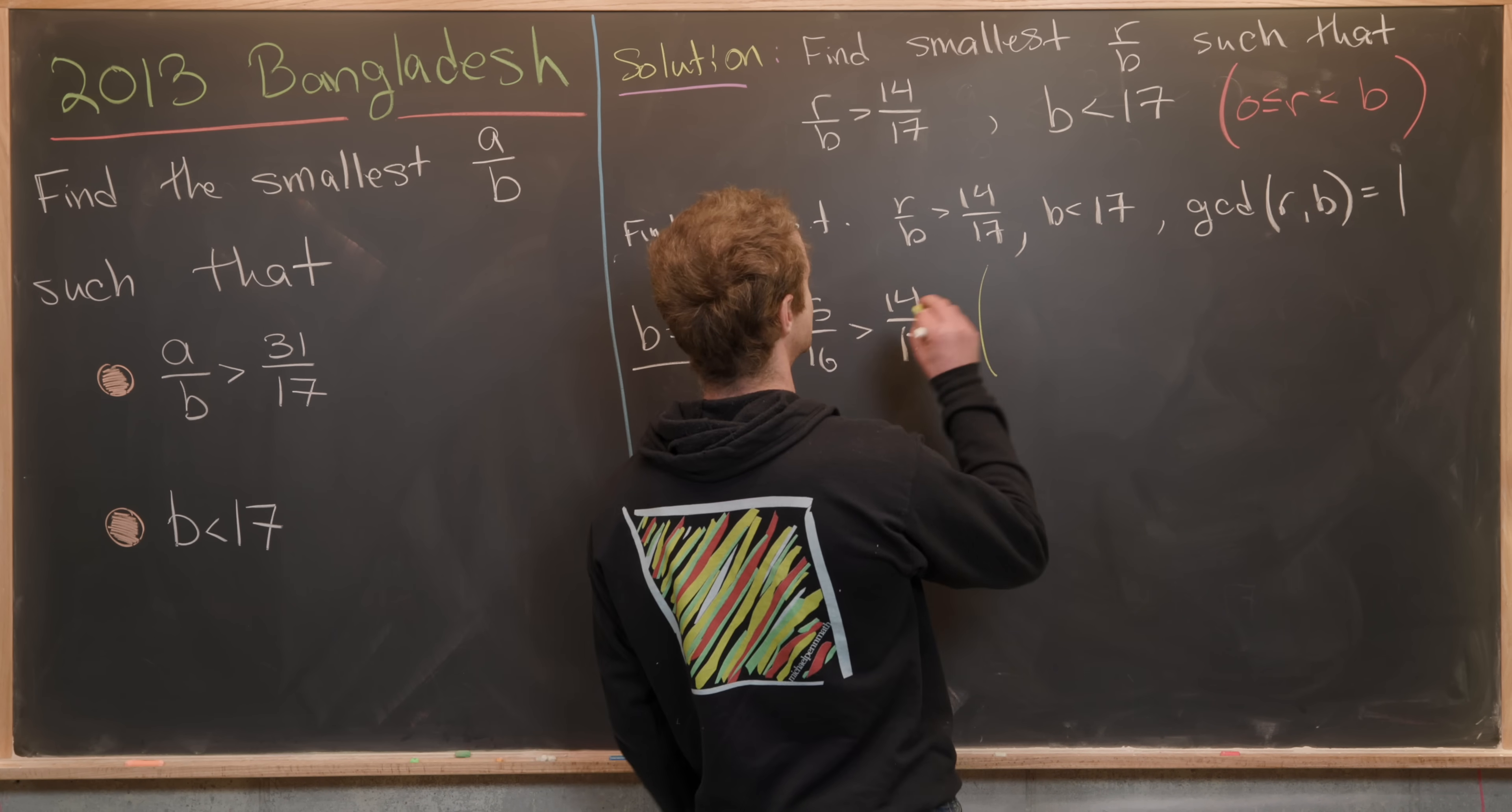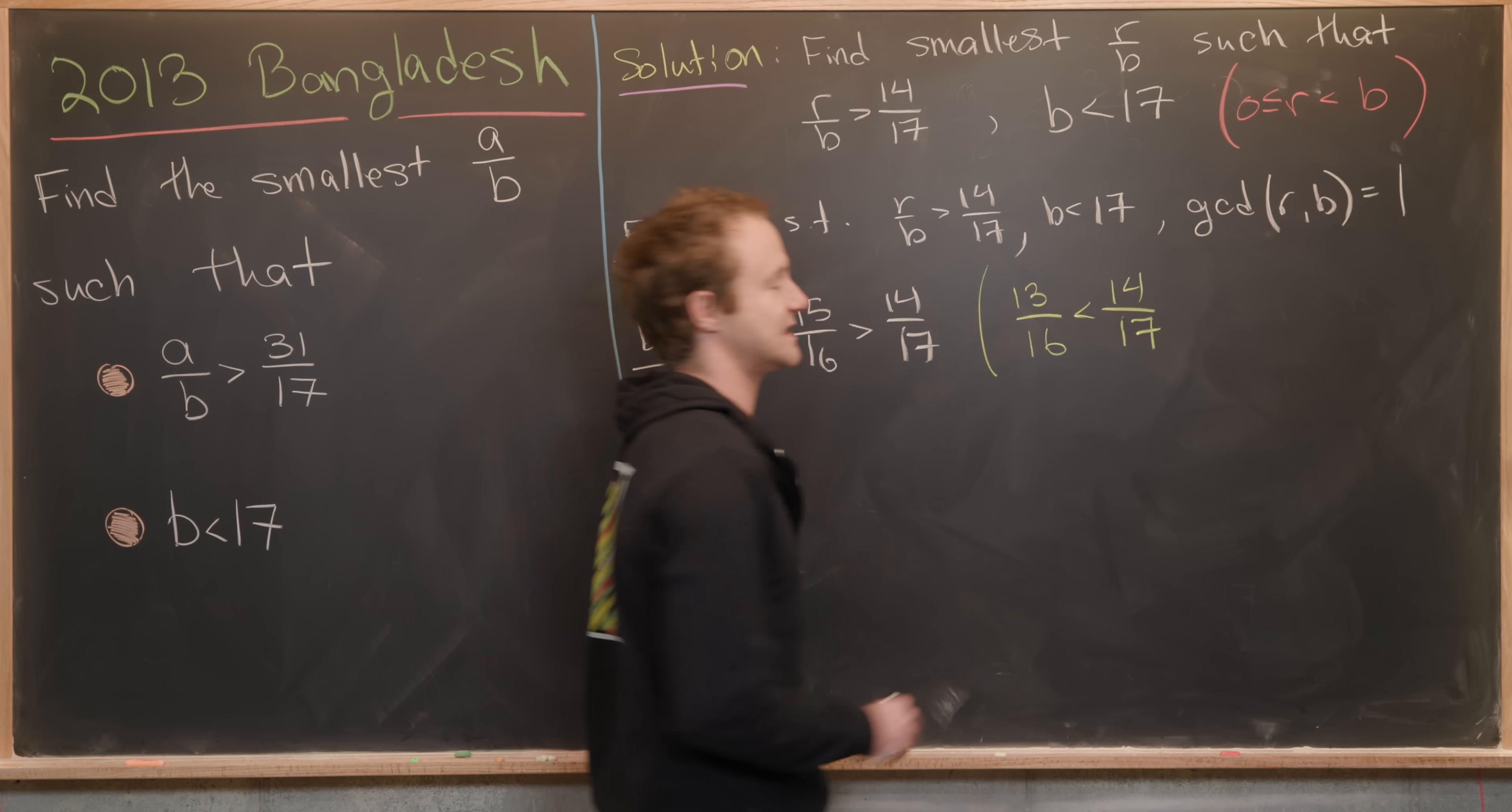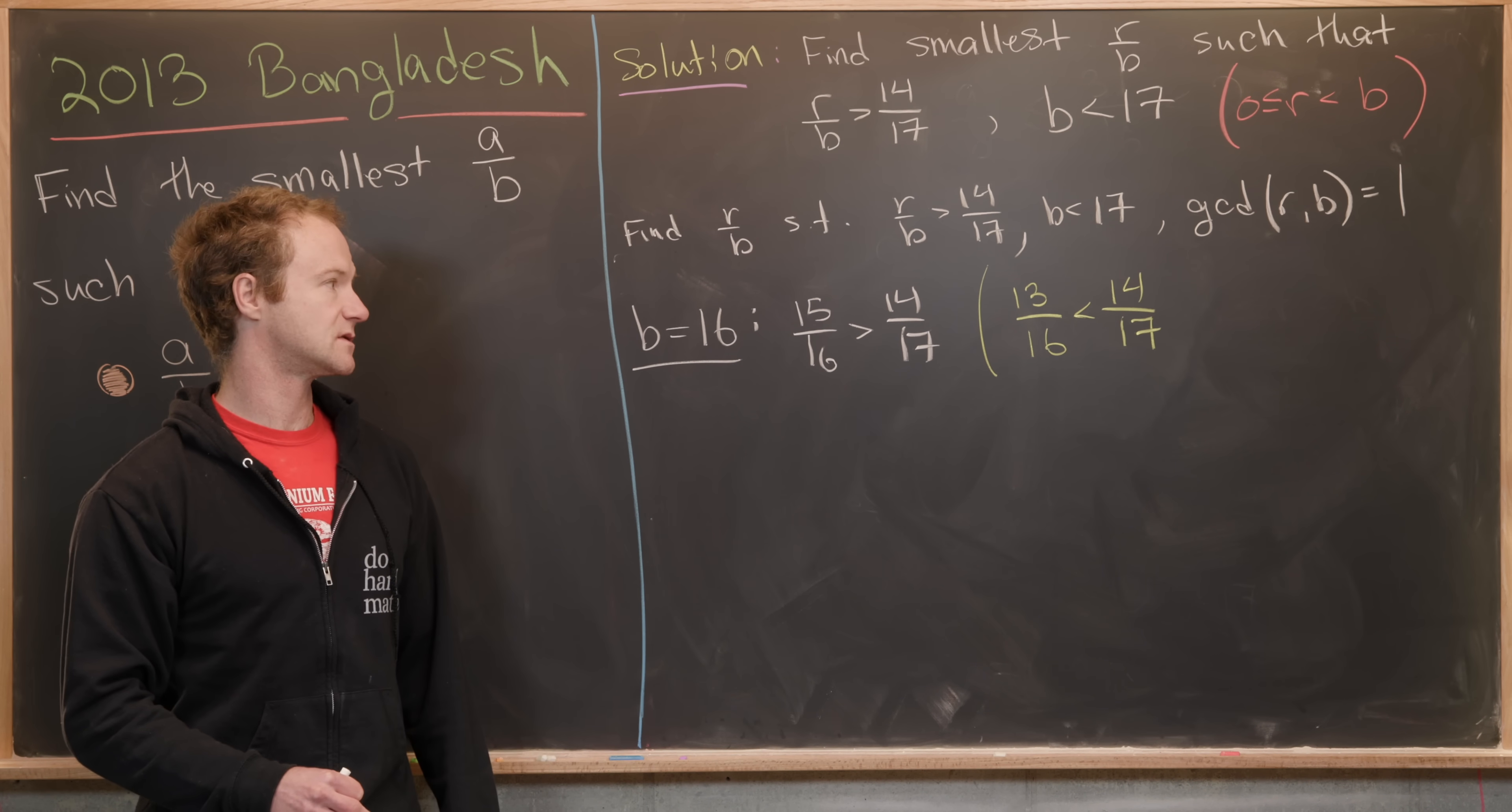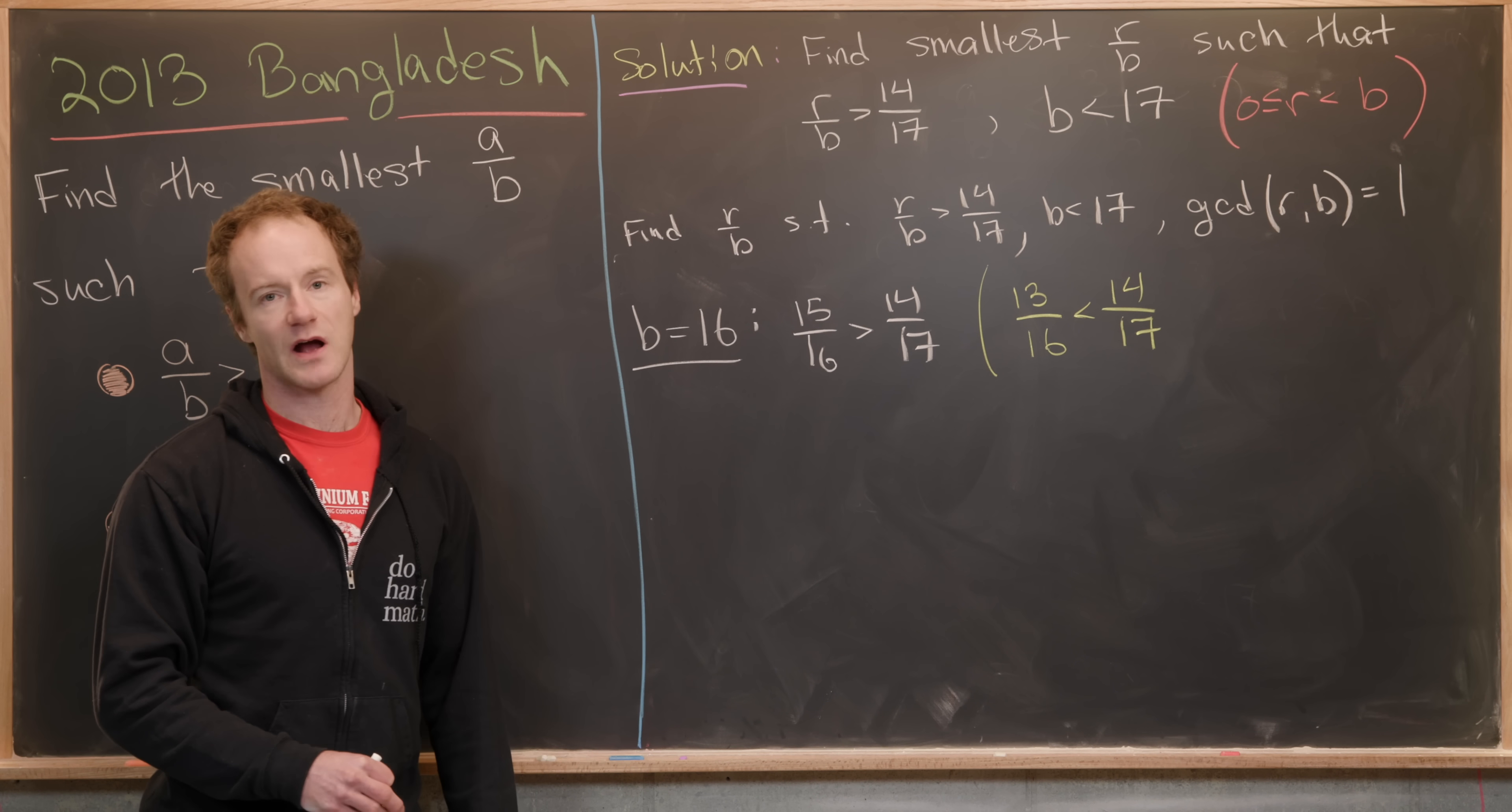We can see that just by looking at a single case: 13 over 16 is less than 14 over 17. That's the next largest fraction with a denominator of 16, whose numerator is relatively prime to 16.